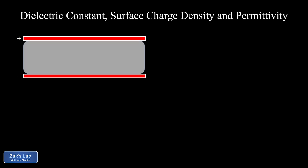In this video, we insert a dielectric — in other words, an insulator — between the plates of a charged parallel plate capacitor, and we use this to introduce the idea of a dielectric constant and learn how to calculate the induced electric field and induced surface charge density.